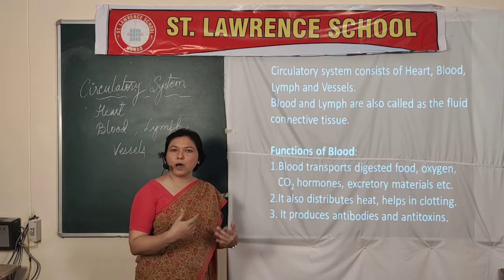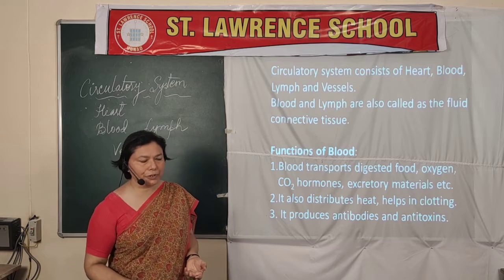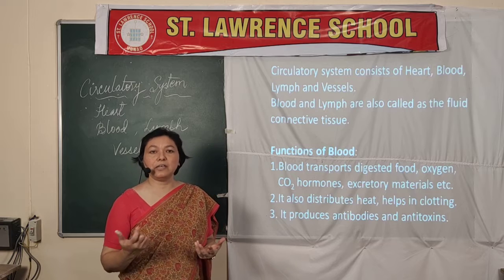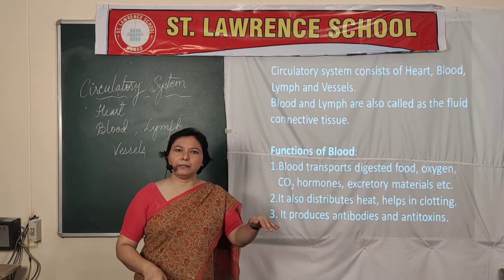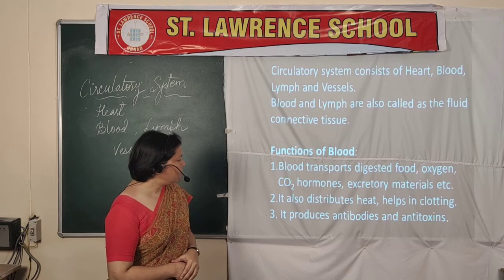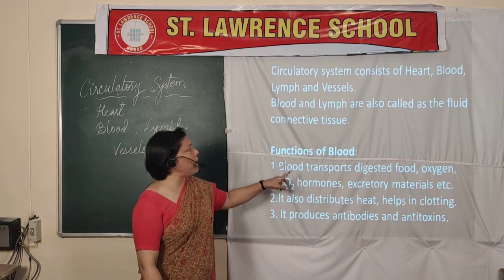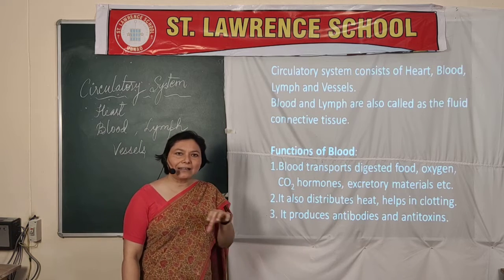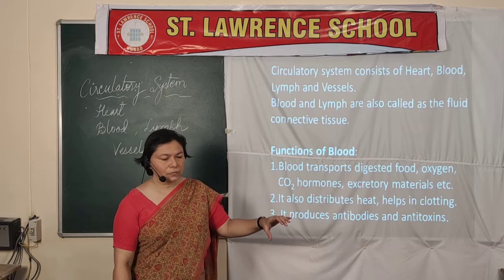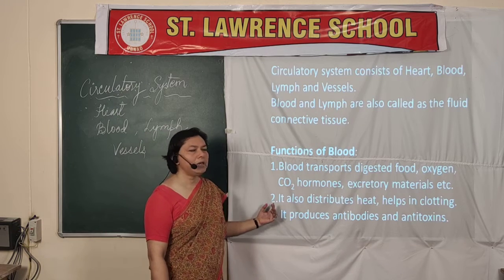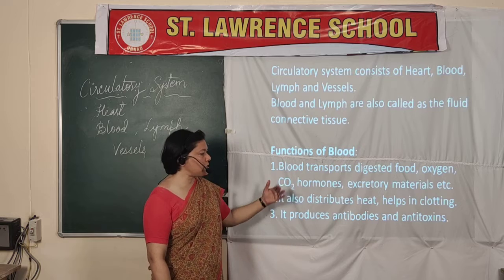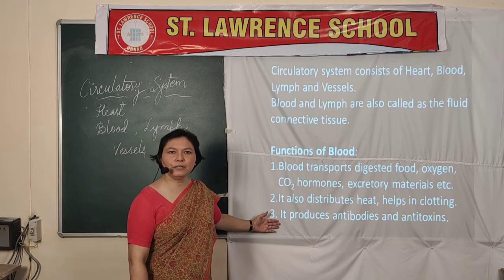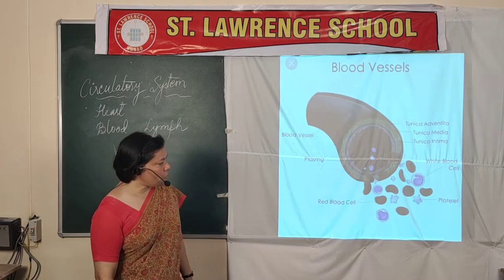The first function of blood is it transports digested nutrients. It also handles the exchange of gases — oxygen is taken in and carbon dioxide is given out — all occurring through blood. Vessels are tube-like or tunnel-like structures that help transport these substances. Blood also distributes heat, helps in clotting of blood, and produces antibodies and antitoxins.